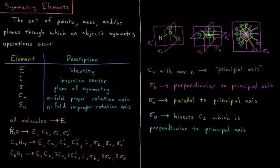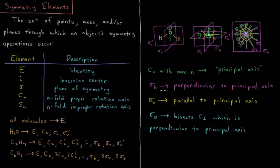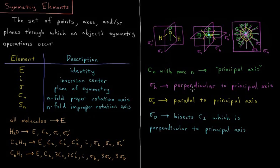Water has four symmetry elements: identity, C2, sigma V, and sigma V prime, as we'll indicate over here in a second. Ethylene or ethene, C2H4, has eight symmetry elements: E, C2, C2 prime, C2 double prime, I, sigma H, sigma V, and sigma V prime.